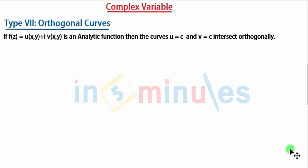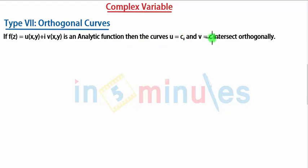Hello students, welcome to In 5 Minutes. We will start with Type 7, a new topic: orthogonal curves in complex variables. Orthogonal curves is nothing but checking whether two curves are orthogonal or not. If f(z) = u(x,y) + i·v(x,y) is an analytic function, then the curves u = c1 and v = c2 intersect orthogonally.